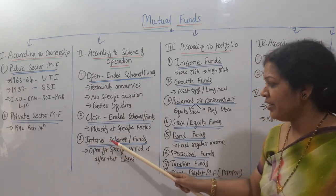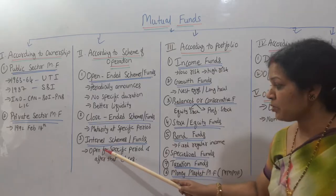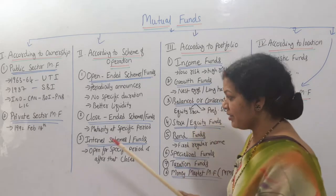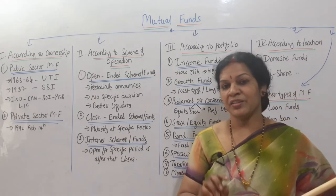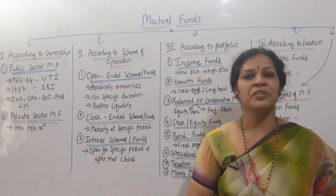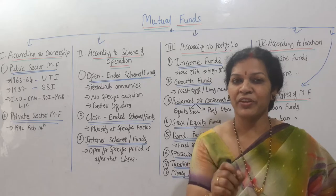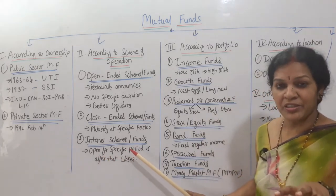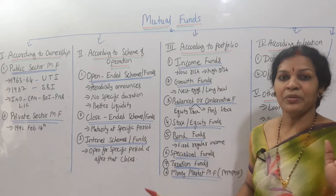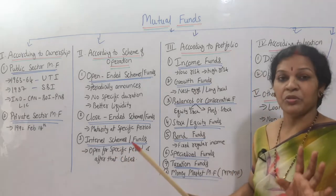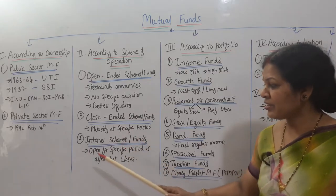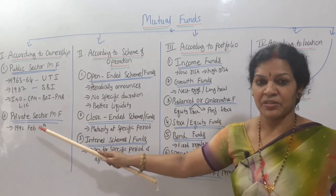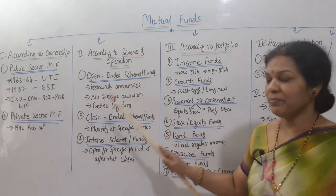The third fund is interval scheme funds. Interval schemes are open for a specific period and after that they close. Suppose I purchase interval funds — it is open for one year, and I can keep the funds during that year. After one year I can withdraw the amount, and after that it is going to close for a particular period. So according to the scheme of operation: open-ended, close-ended, and interval scheme funds.